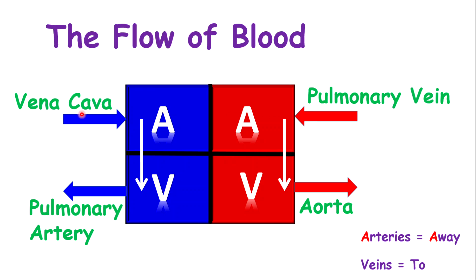Blood coming from the lungs is associated with the word pulmonary, so that vessel connected to the left atrium is the pulmonary vein. The bottom chambers push blood out — taking blood away from the heart — so they are examples of arteries. On the right side of the heart, the pulmonary artery takes blood towards the lungs. On the left side, it is the aorta, the largest artery in the body, taking blood towards the body.